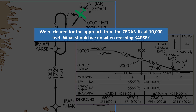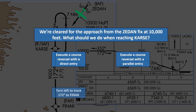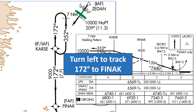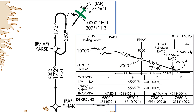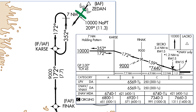Question 2: We're cleared for the approach from Zidane at 10,000 feet. What should we do when reaching Karst? Execute a course reversal with the direct entry, execute a course reversal with the parallel entry, turn left to track 172 degrees to Finac, or hold at Karst until instructed? The answer is we'll turn left to track 172, inbound on the approach towards Finac. There's a hold in lieu of procedure turn depicted at Karst, but the route we're flying on from Zidane has a note saying no PT — meaning we ignore the course reversal. We could request the course reversal if we needed more time to lose altitude, but in the absence of any additional coordination, it's a straight-in approach.